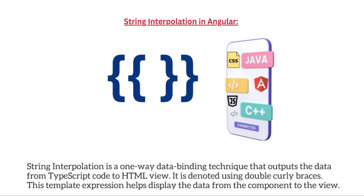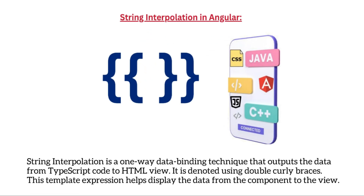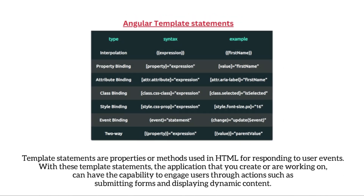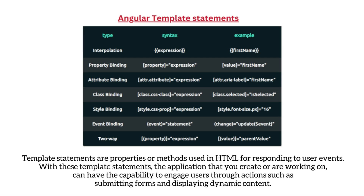String interpolation is a one-way data binding technique that outputs data from TypeScript code to the HTML view, denoted using double curly braces. This template expression helps display data from the component to the view. Template statements are properties or methods used in HTML for responding to user events, giving the application the capability to engage users through actions such as submitting forms and displaying dynamic content.